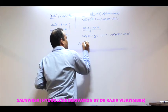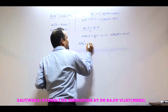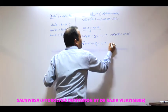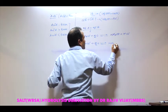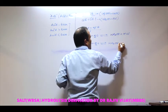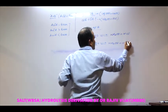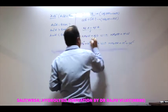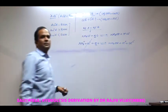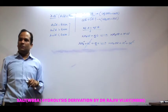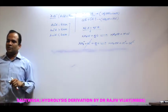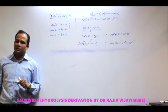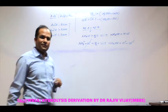NH4+ plus Cl- plus H2O, converted into NH4OH plus H+ plus Cl-. In the solution, what is present? H+. Therefore the pH of the solution is less — it is acidic.